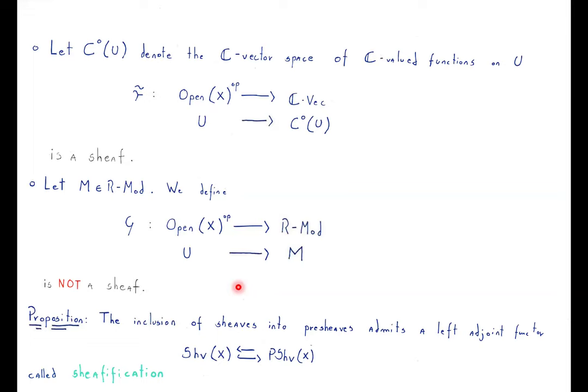We have an inclusion from sheaves to presheaves, because a sheaf is a presheaf satisfying some additional properties. We have a proposition that tells us there is a left adjoint to this inclusion called sheafification. You can think of it similarly to how you can forget a group structure and go into sets, and then have a way to go from sets to groups — except here we think of it as inclusion rather than a forgetful functor. So there is a way to take a presheaf and associate a sheaf.